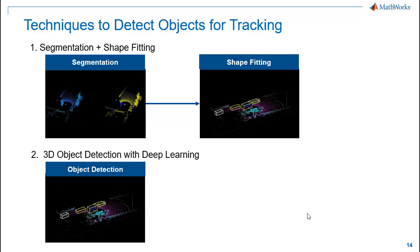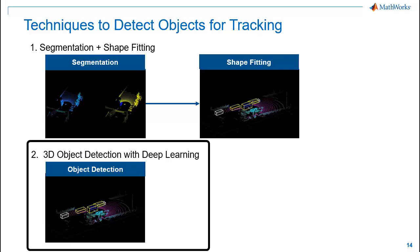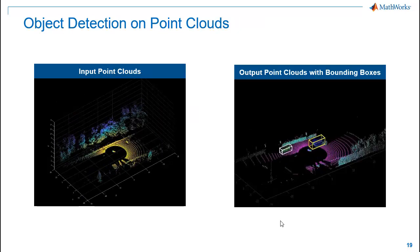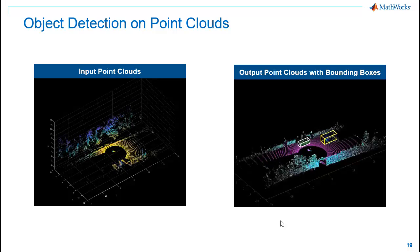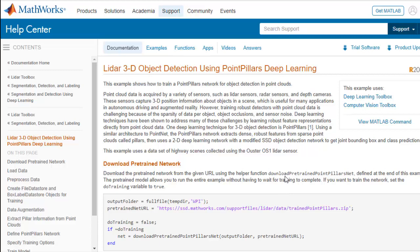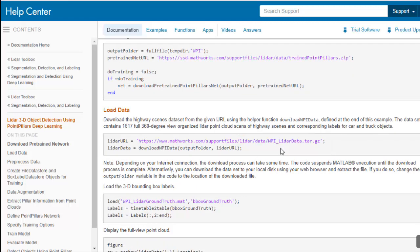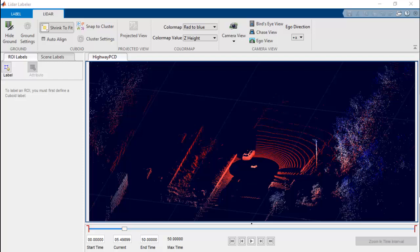After segmentation, we'll fit oriented bounding boxes around the segmented objects using the pcfitcuboid function. It uses L-shape fitting to perfectly fit oriented bounding boxes around the objects. The second technique to detect objects from point clouds for tracking is to use object detection networks. Here we apply the PointPillars network on the point clouds, which can detect objects and fit oriented bounding boxes around them. Refer to the MathWorks documentation example which explains in detail how to model and train the PointPillars network from scratch. This example is shipped with a pre-labeled dataset.